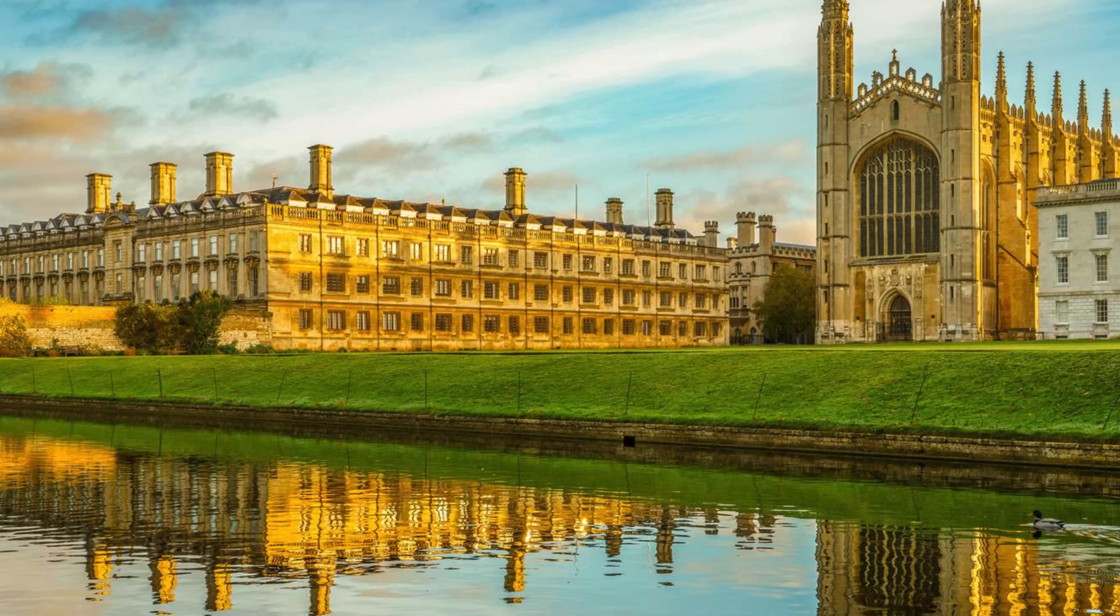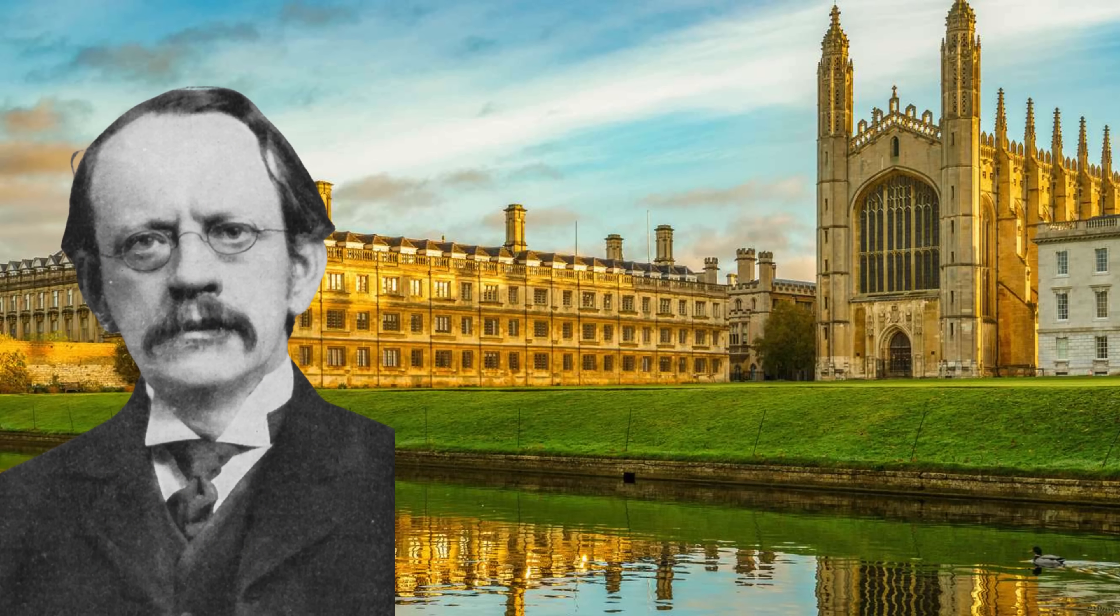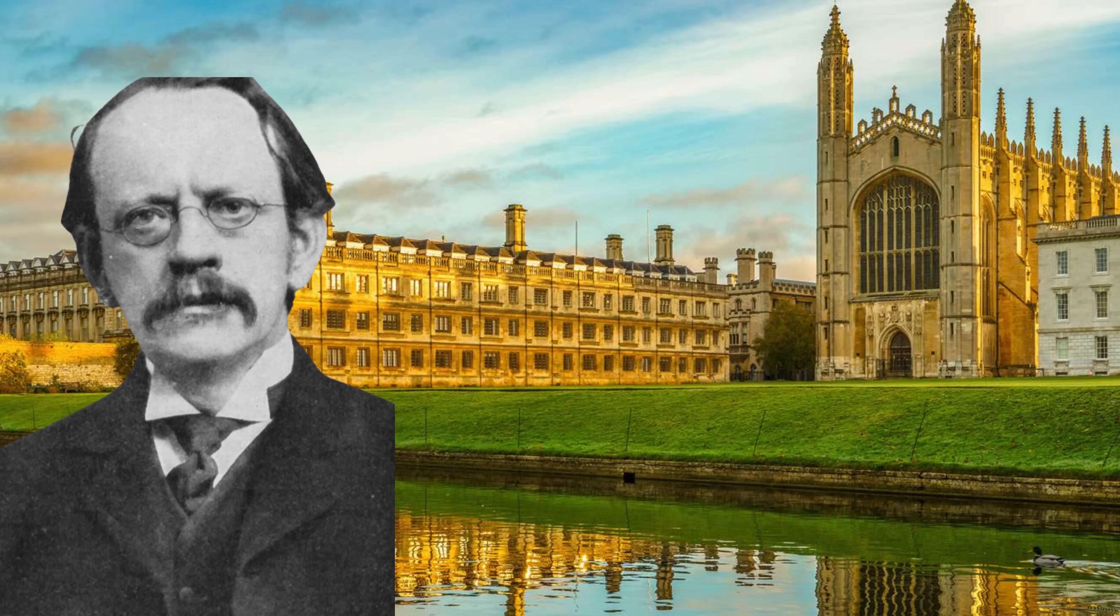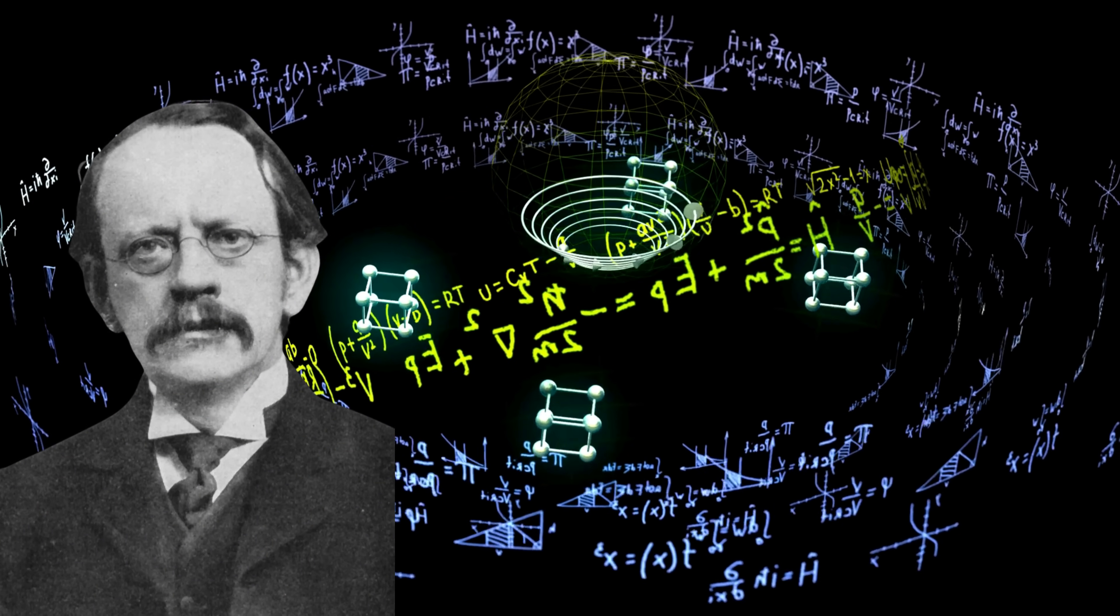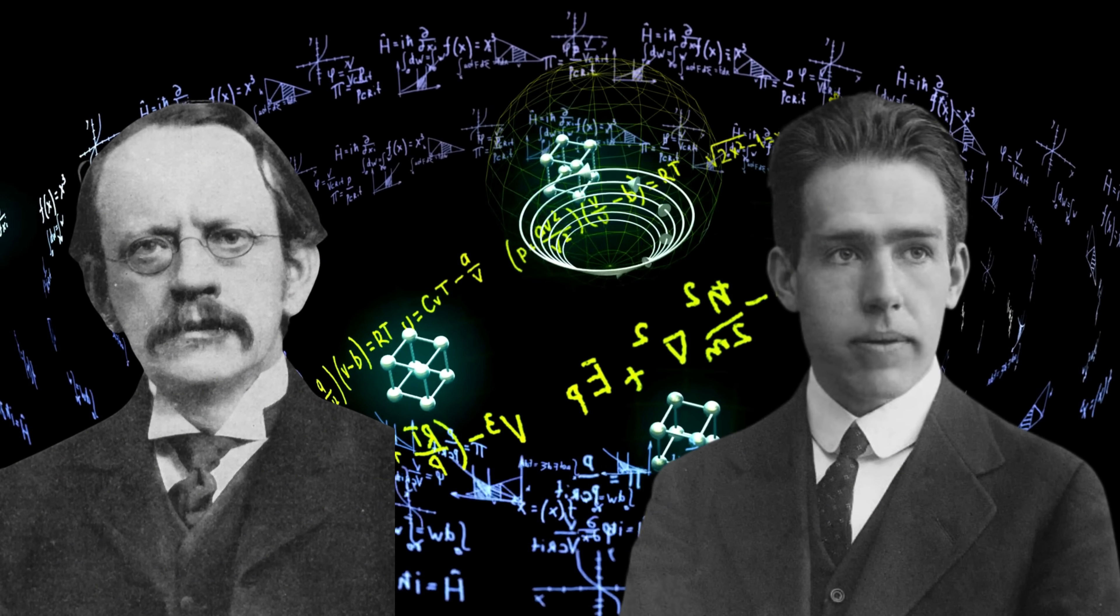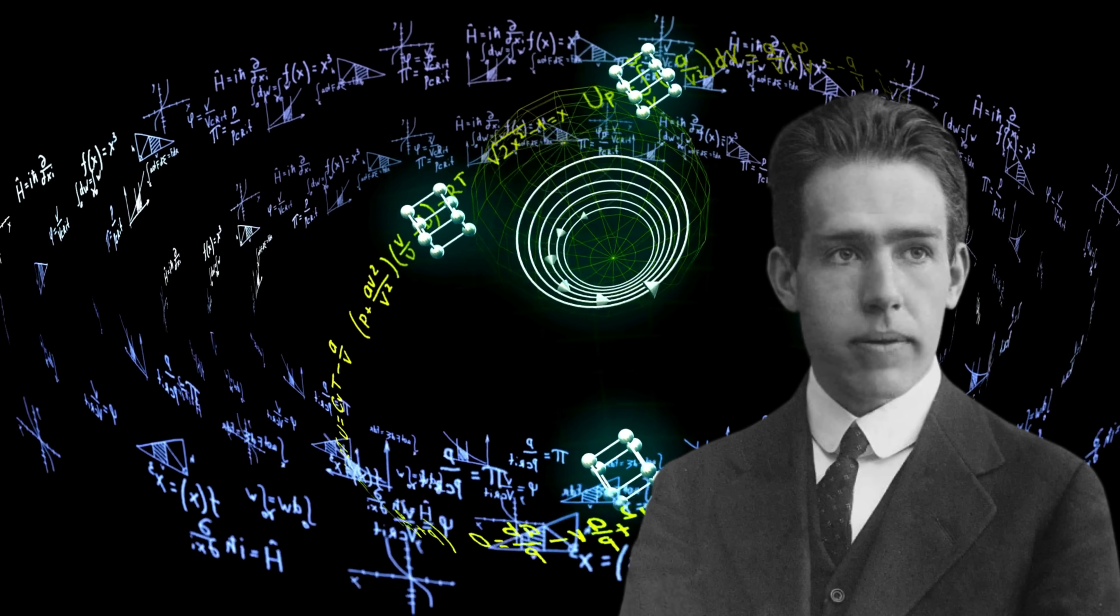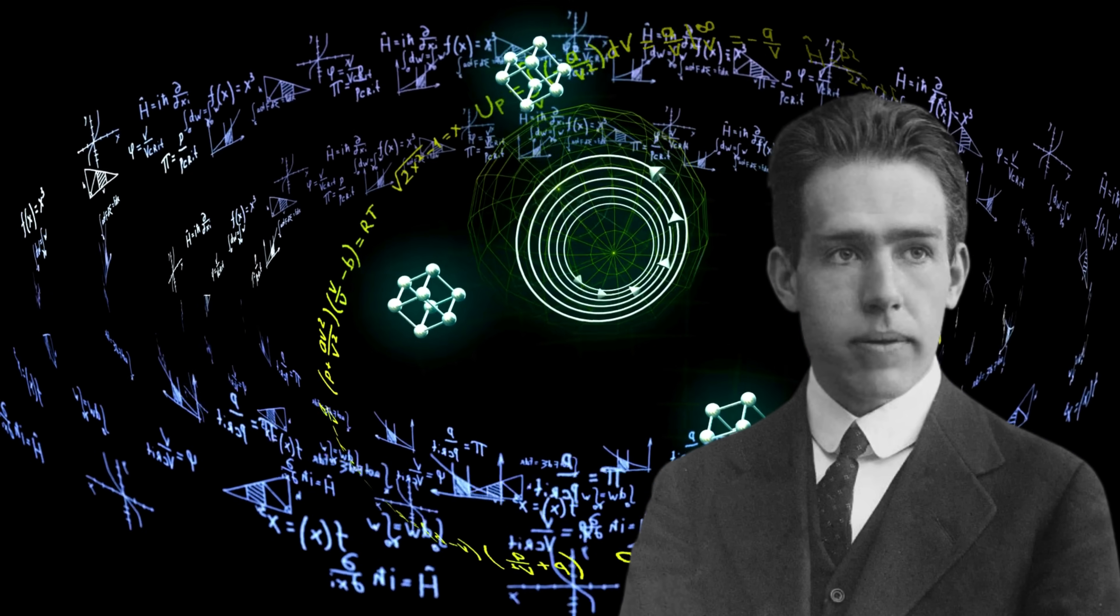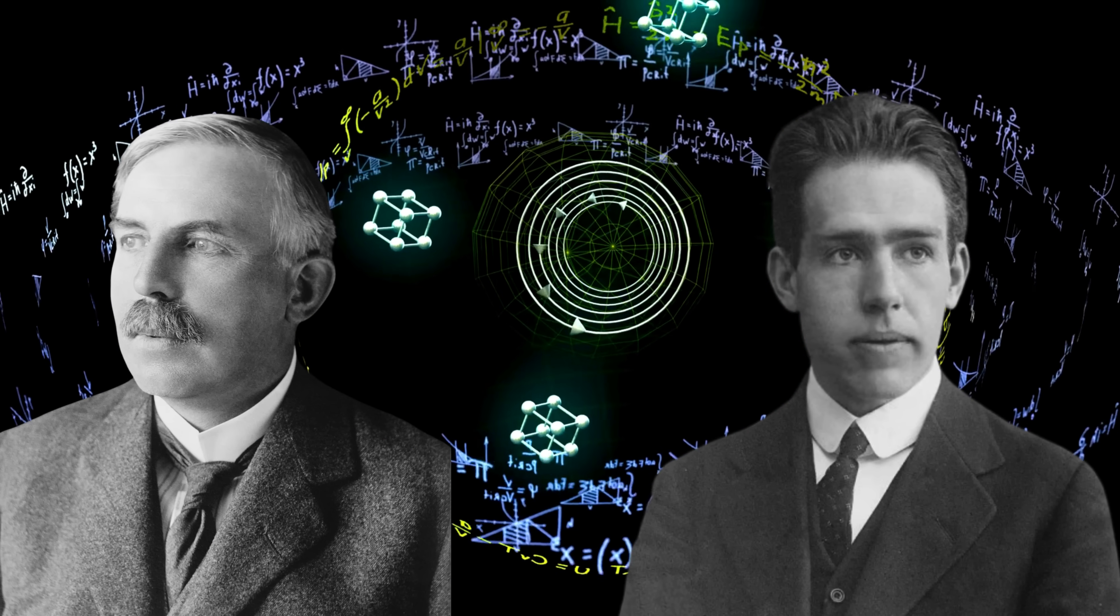As a young scientist, he faced early setbacks. When he went to Cambridge to work under J.J. Thompson, the discoverer of the electron, he was largely dismissed. Thompson found Bohr's approach unconventional, and Bohr struggled to fit into the rigid research environment. Disappointed but undeterred, he found his true intellectual home with Ernest Rutherford in Manchester. Rutherford, unlike Thompson, recognized Bohr's brilliance and encouraged his independent thinking.